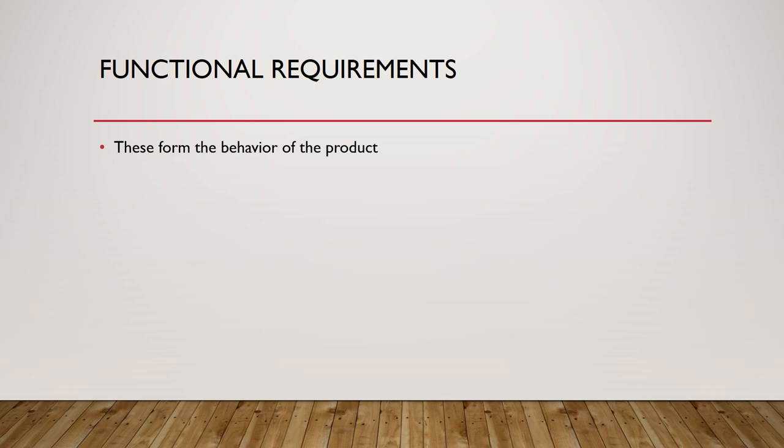Functional requirements basically form the very behavior of the product. This is how the product is going to behave — it's the characteristic and functionality of the product. So if somebody is giving you functional requirements for your project, what that means is you are being told how the product of that project is going to work, how it is going to function, and how it will be used by users. New features, bug fixes, and new behavior are examples of functional requirements.